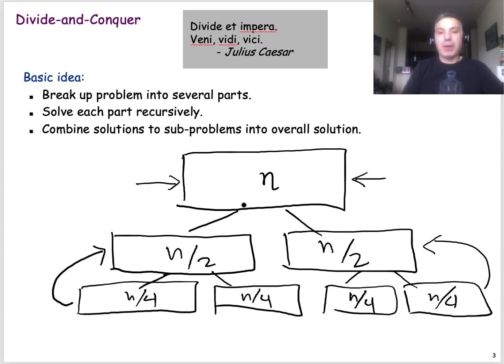if I give you the problem of finding the maximum of n numbers, you don't gain anything by splitting these numbers into two parts, finding the maximum in each of these two sub-arrays, and then combining the solution.